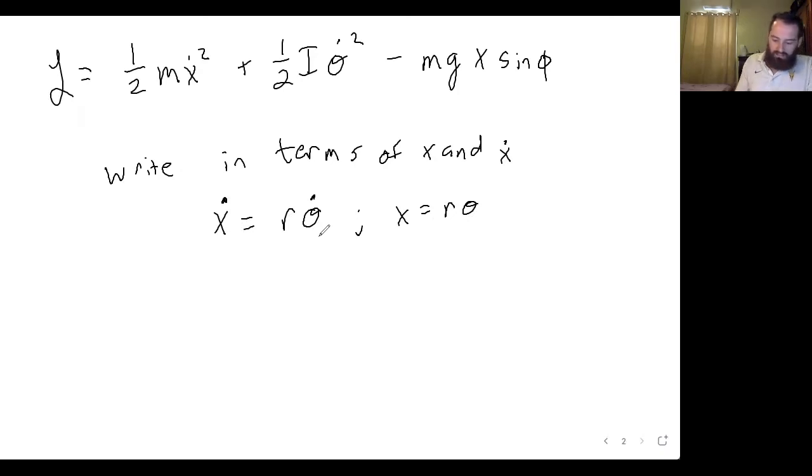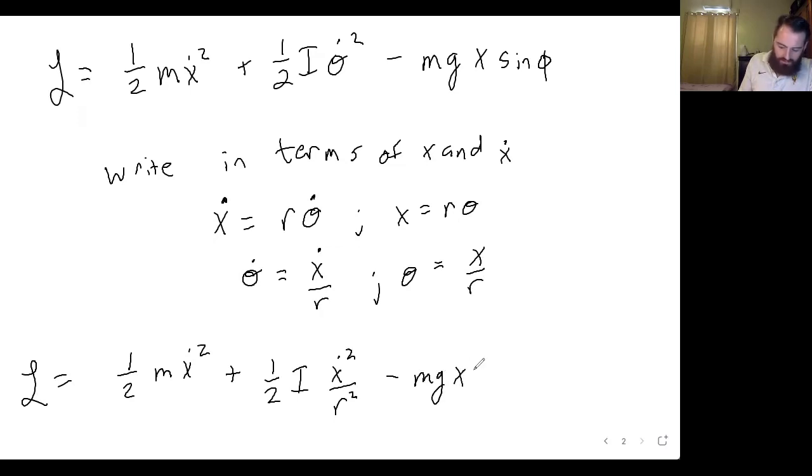So solving this for theta, because we want everything in terms of x, we get θ̇ equals ẋ over r and θ equals x over r. So if we rewrite our Lagrangian we get one-half m ẋ² plus one-half I ẋ² over r² minus mg x sin φ.